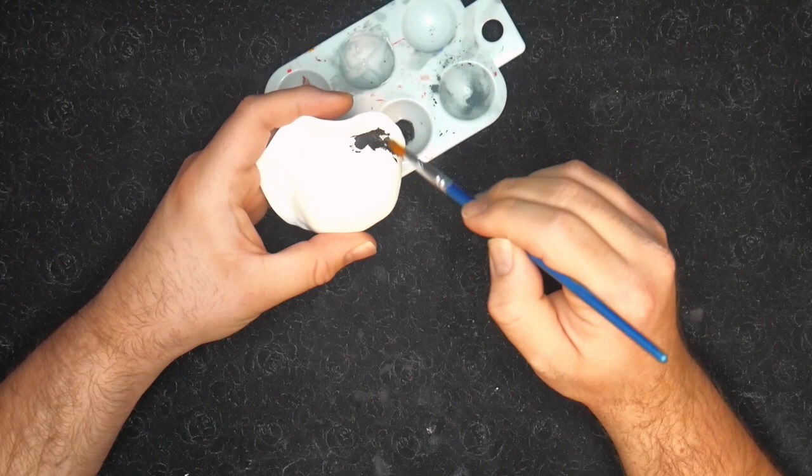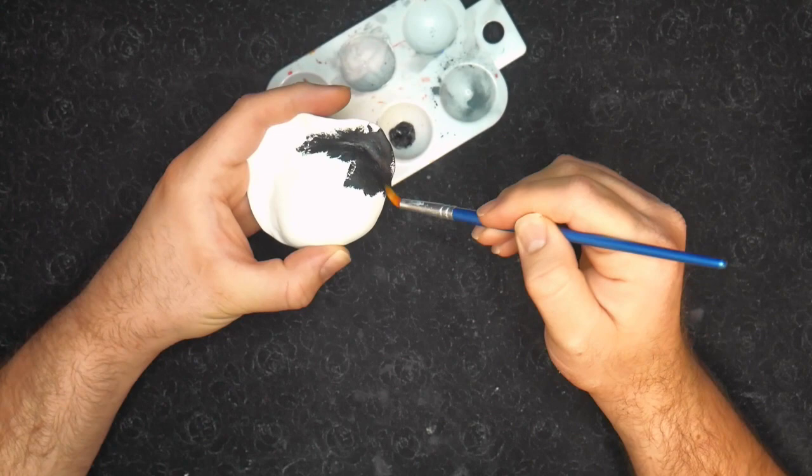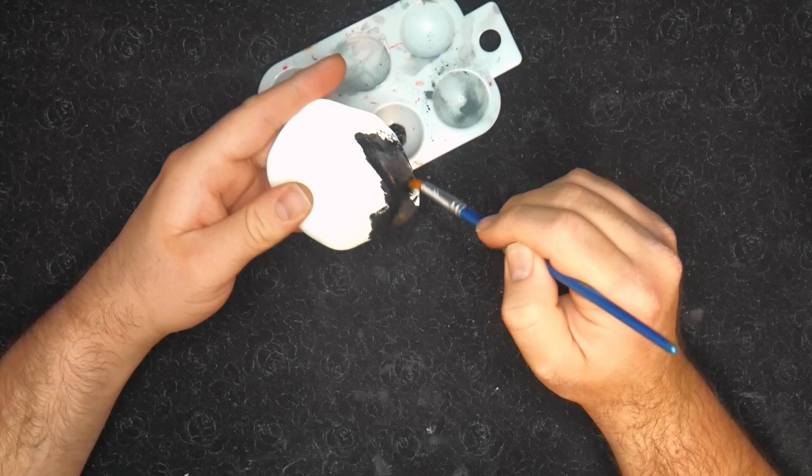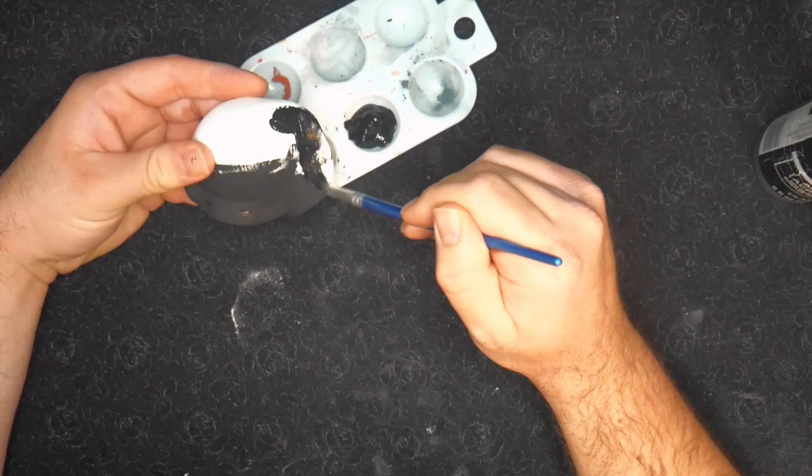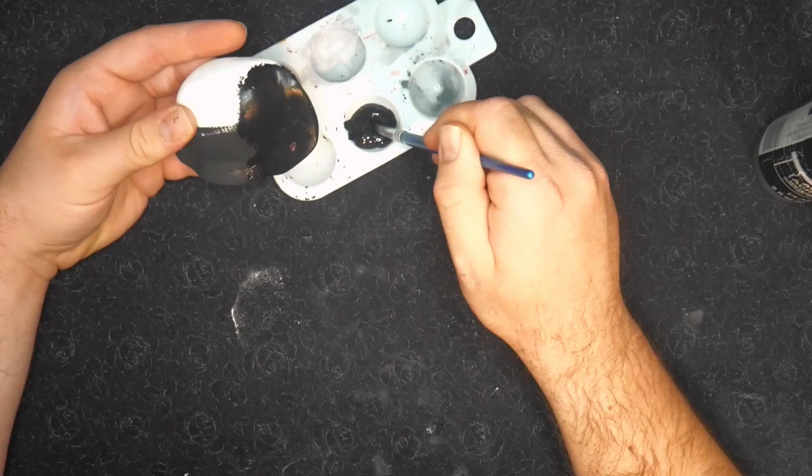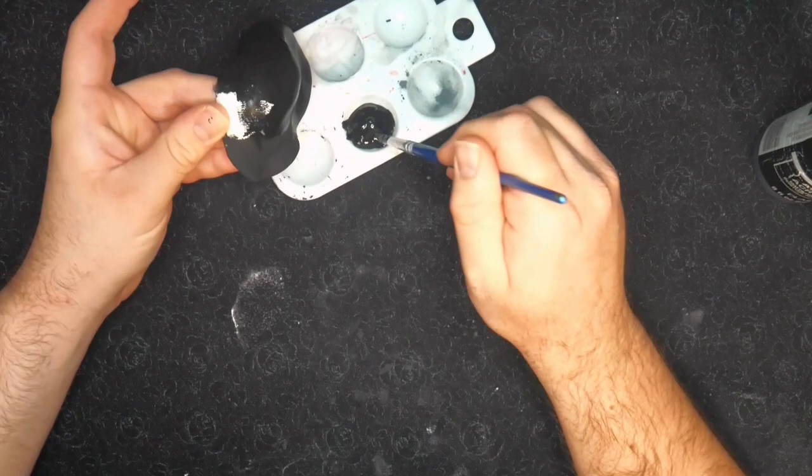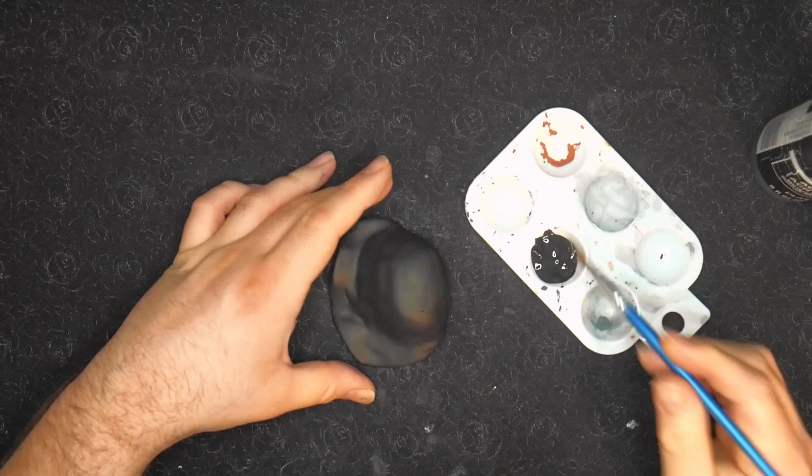I'm using FolkArt Matte Acrylics to paint it. Once it's fully coated in black, it's time to add the white spots that give the magpie ink cap its name.